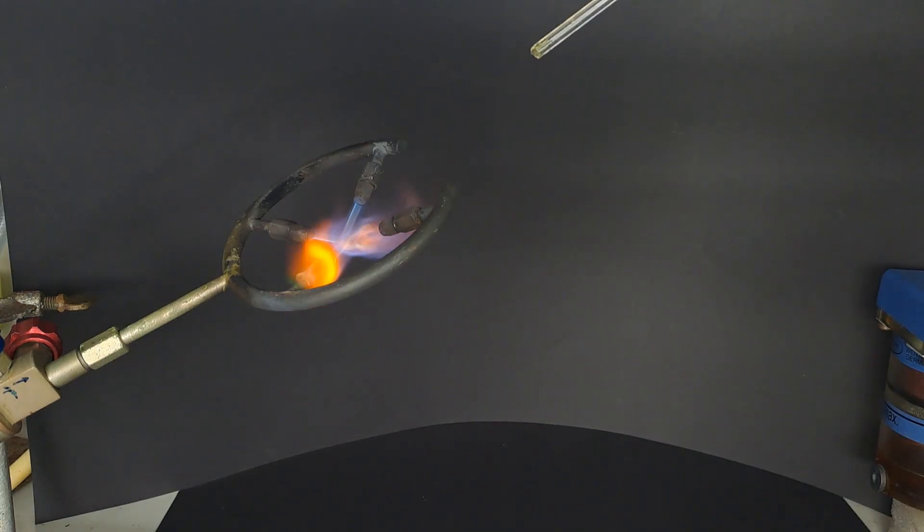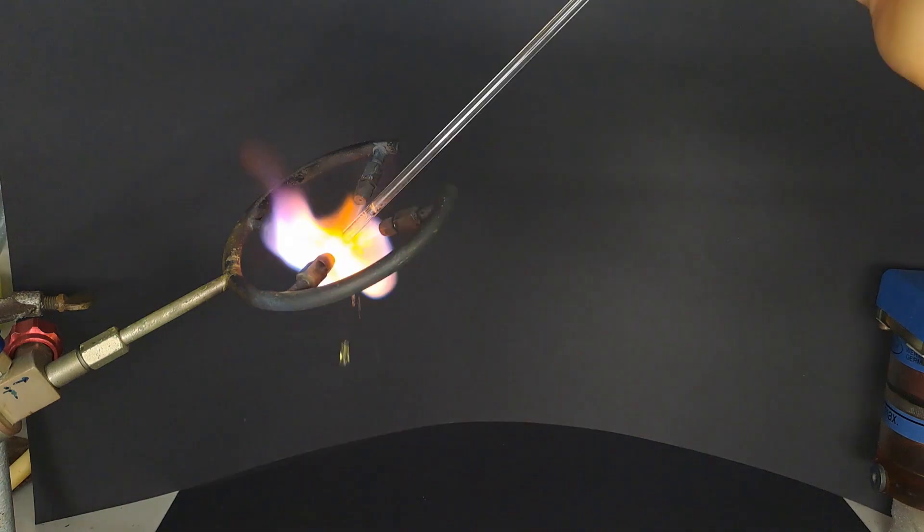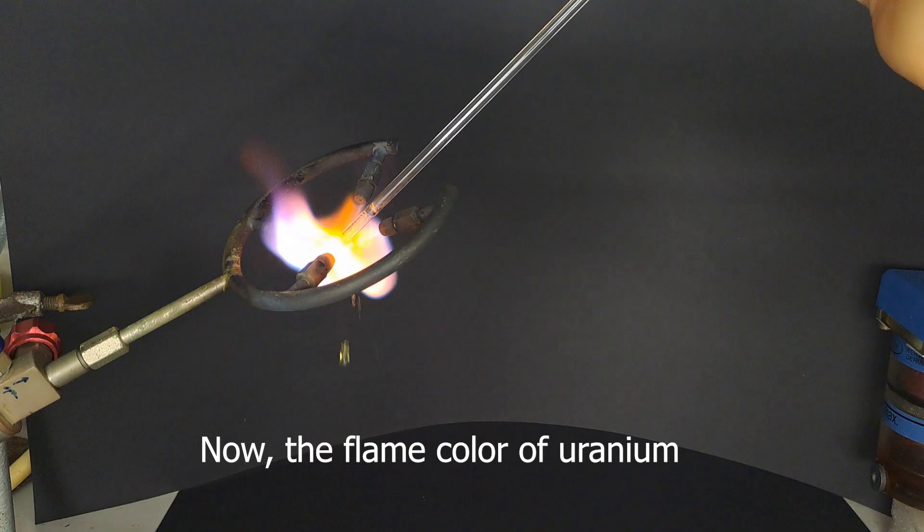What I have here is a quartz glass tube into which I carefully pipetted a drop of the uranium solution and it's blue! So the green color was probably from the metal of the needle, but now we know that the flame color of uranium is blue.